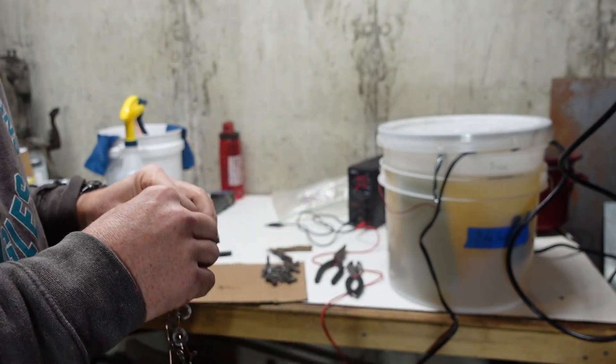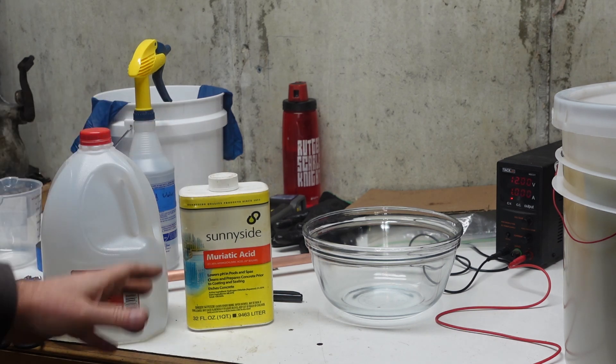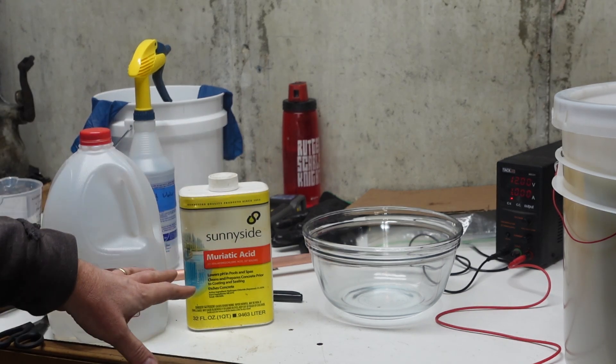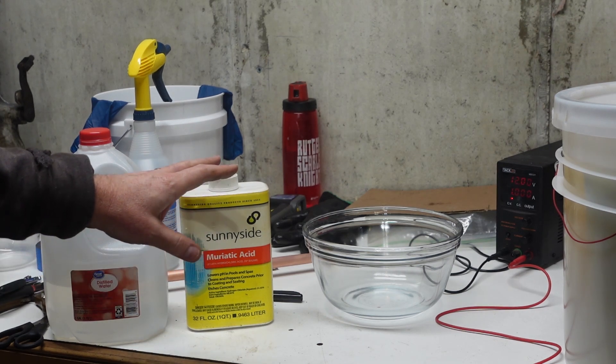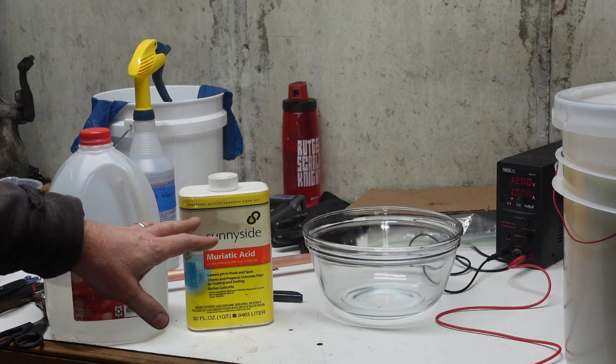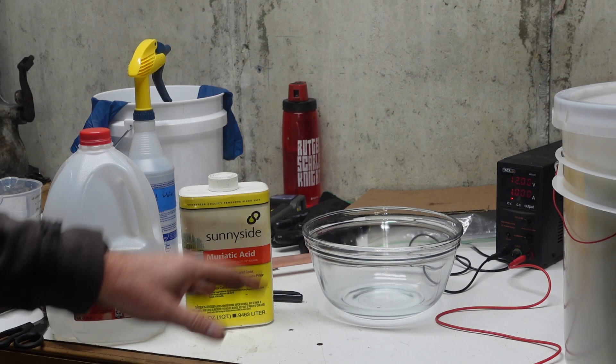Five minutes on the degreaser. Muriatic acid here, about 31% hydrochloric acid. That's what I'm going to use to acid etch. This stuff is horrible. I'm going to do this outside. I got a glass bowl. I'm going to use three cups of water and one cup of muriatic acid.